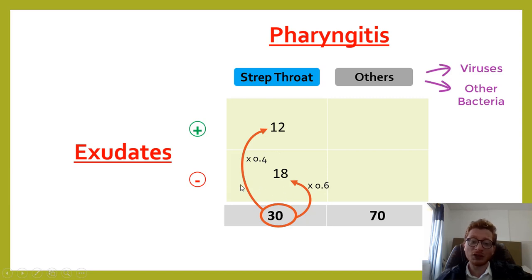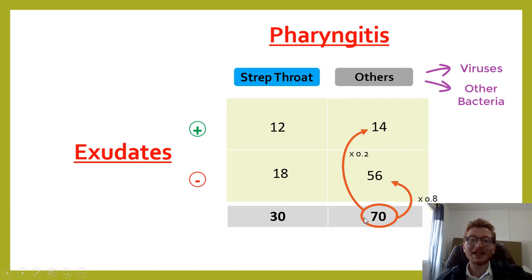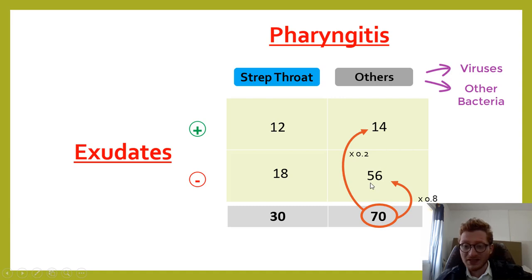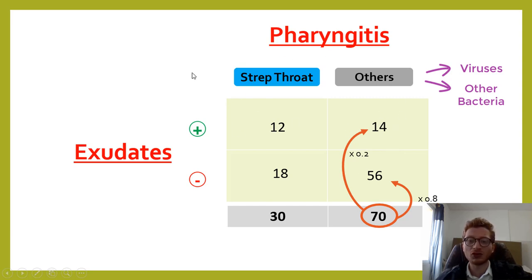What about the other 70 cases? We use specificity here: 0.8 times 70 equals 56. The remaining 14 will have exudates. So out of 70 people who do not have strep throat, 56 will not have exudates, but 14 still will have exudates even though they do not have strep throat.